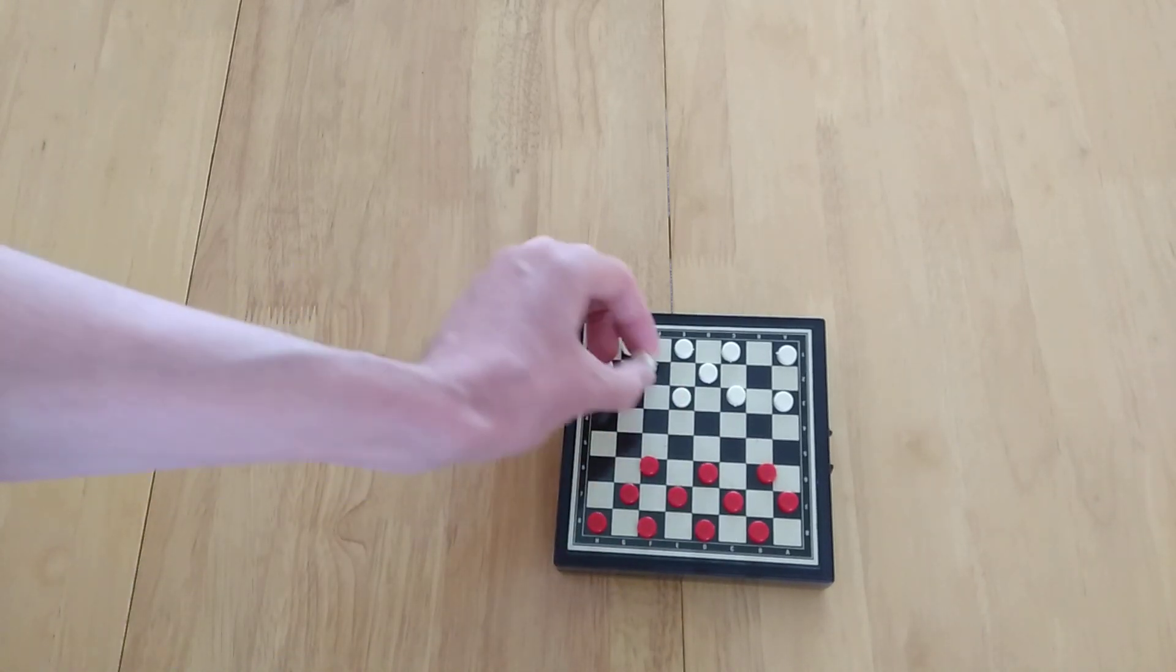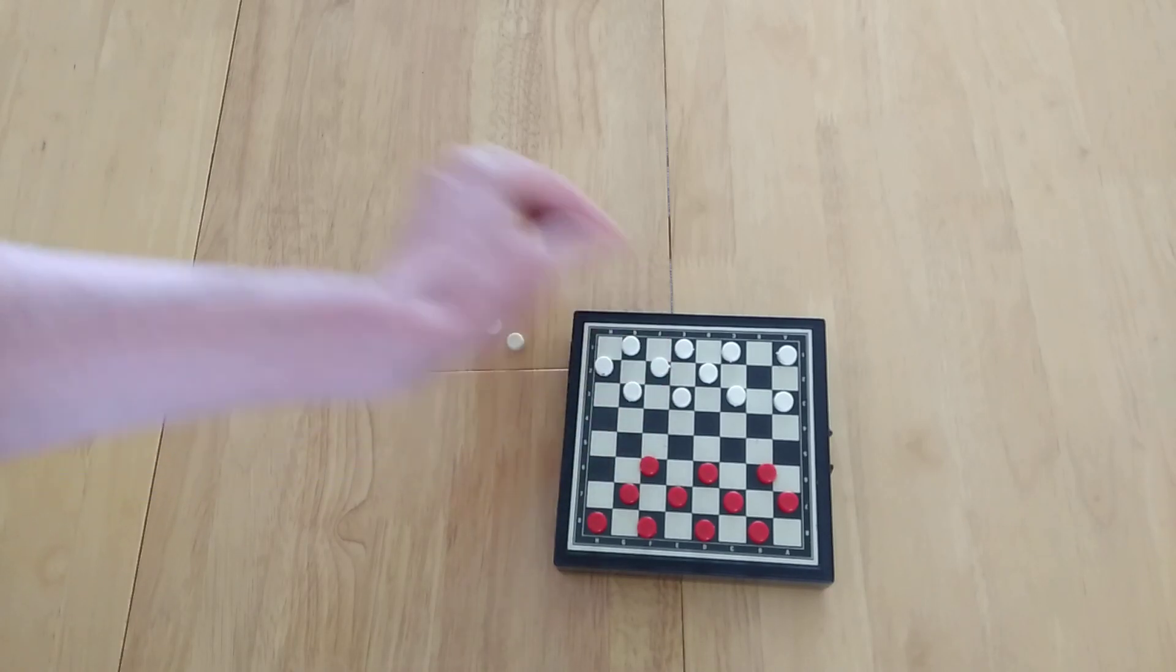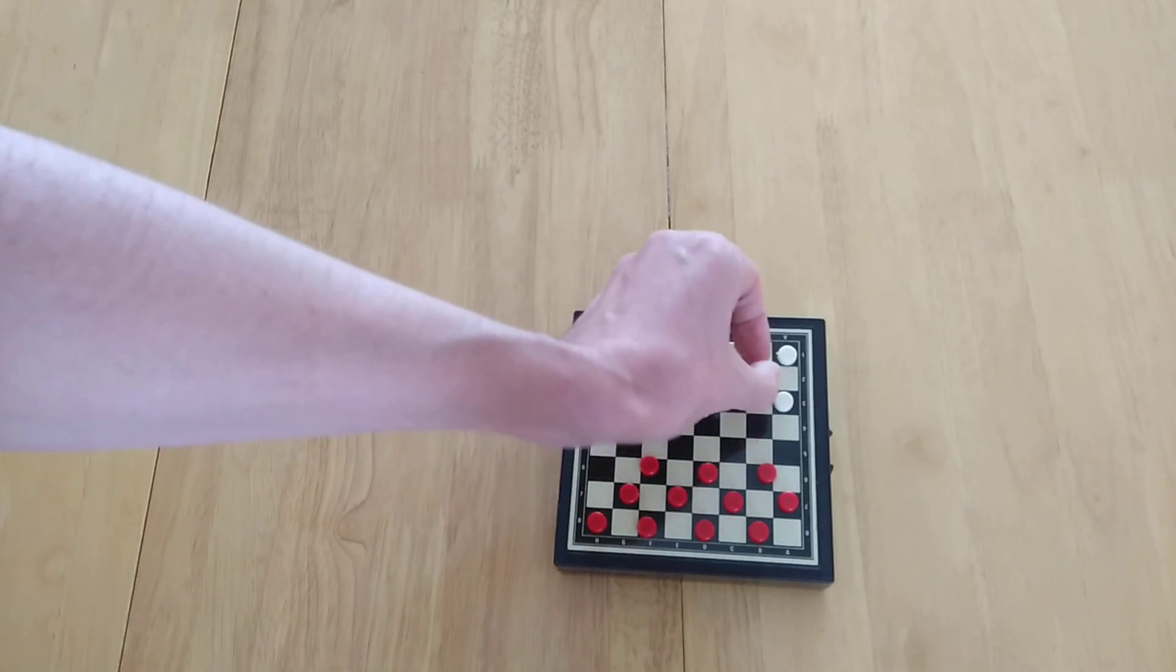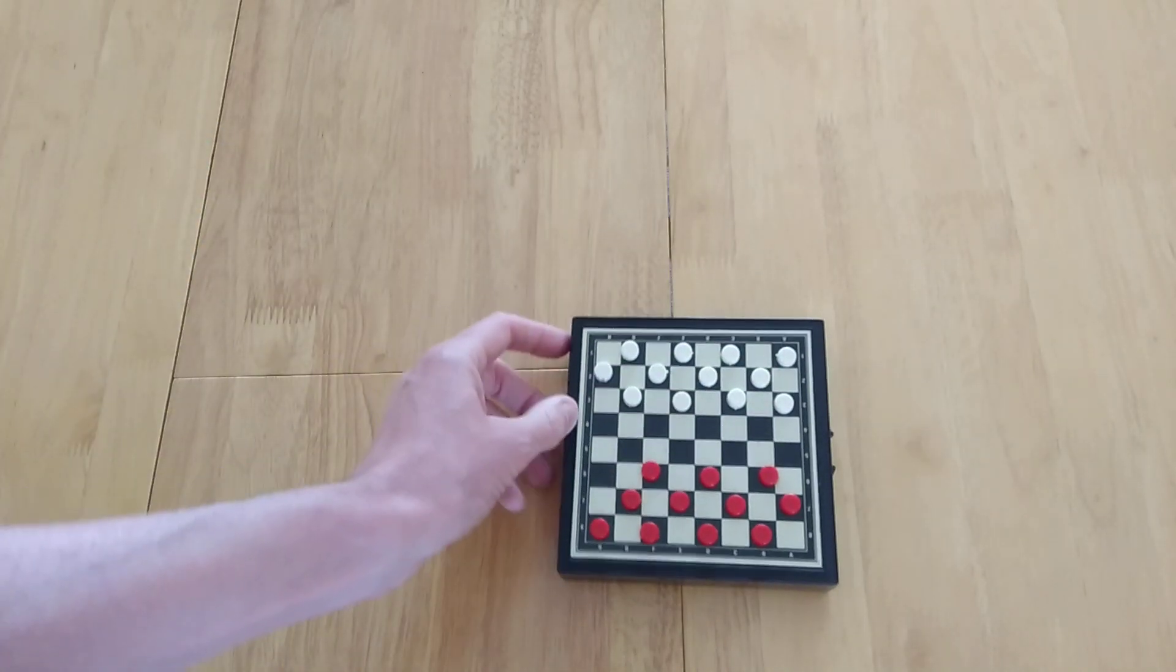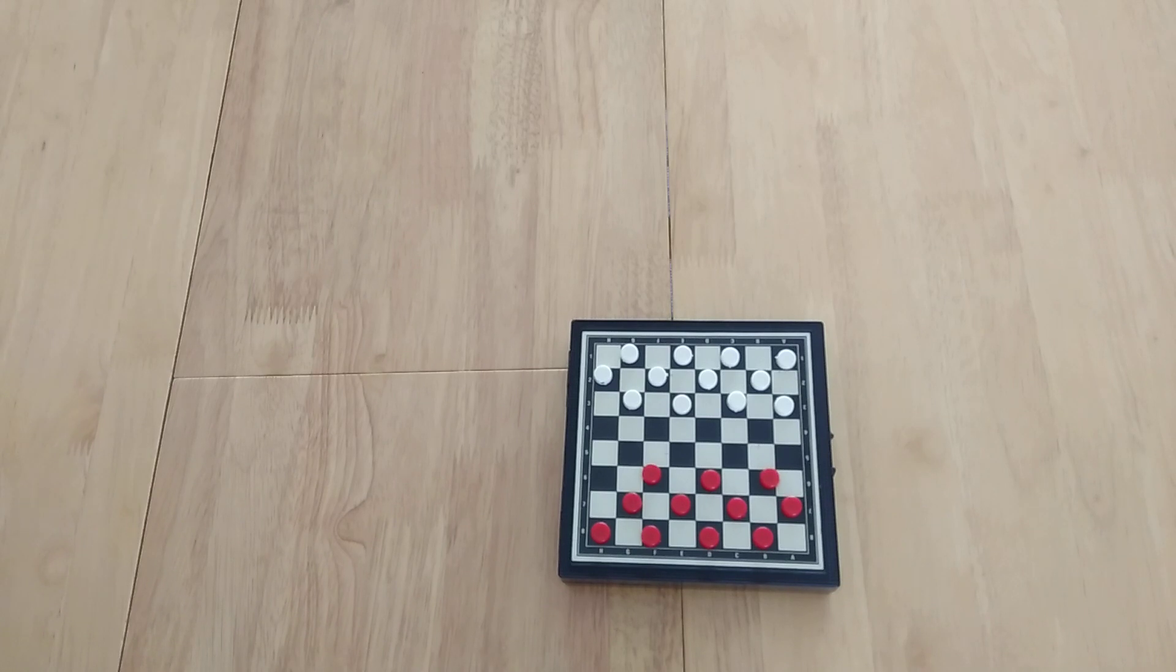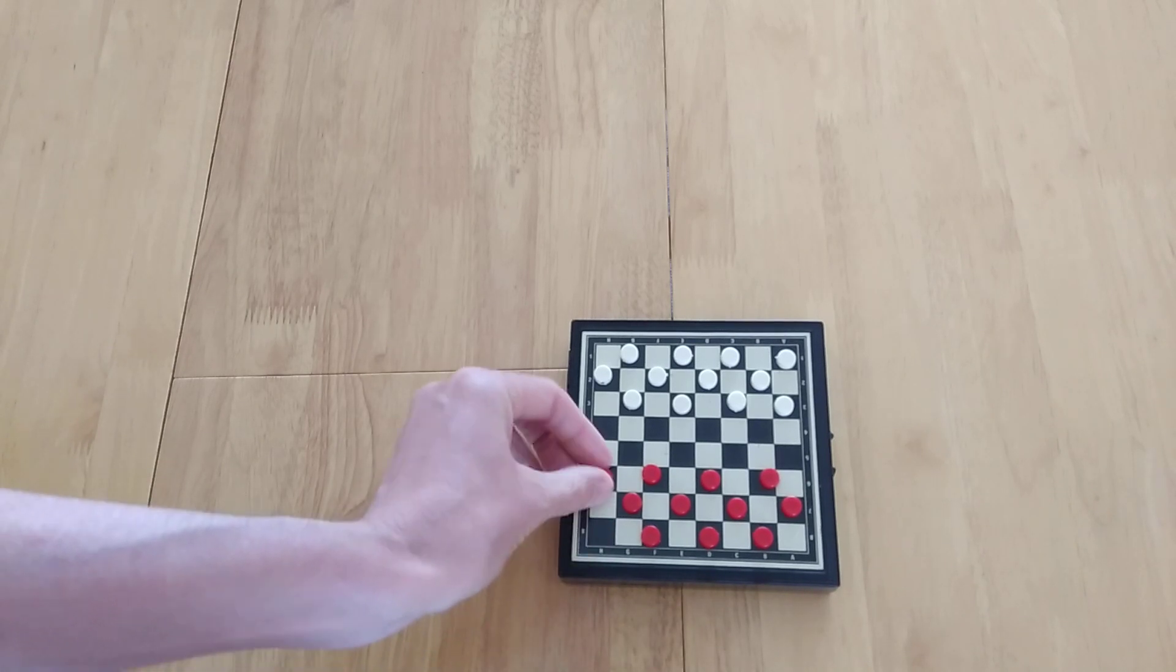Now, there are some variants. Please do pop in the comments what you fancy recording. My thoughts are going to be Brazilian. There's going to be the Russian variant. And there's also international. International has been tricky because I've only ever had this size board. I've only played other variants online. But this is just to show you how to play draughts or checkers.